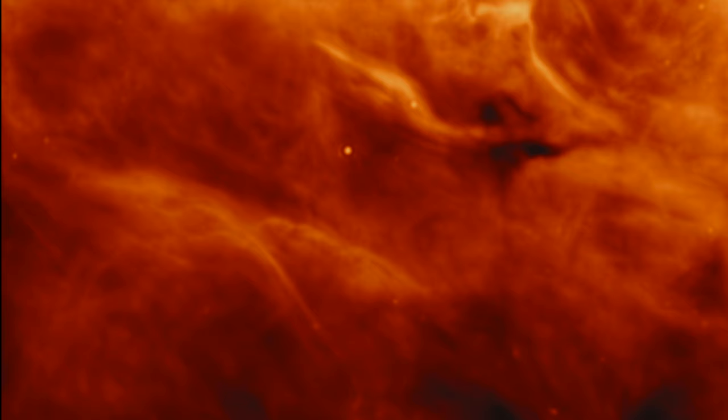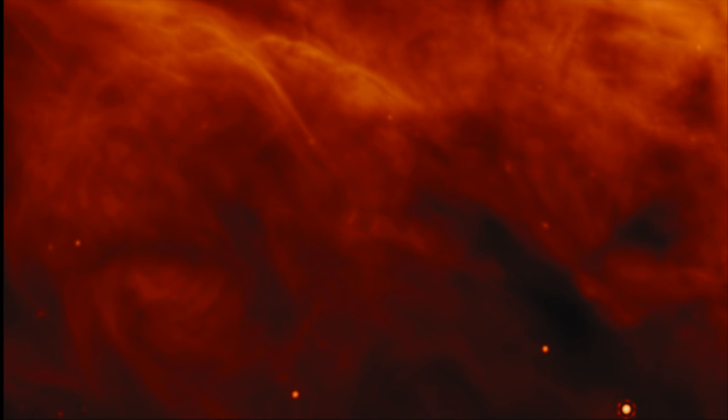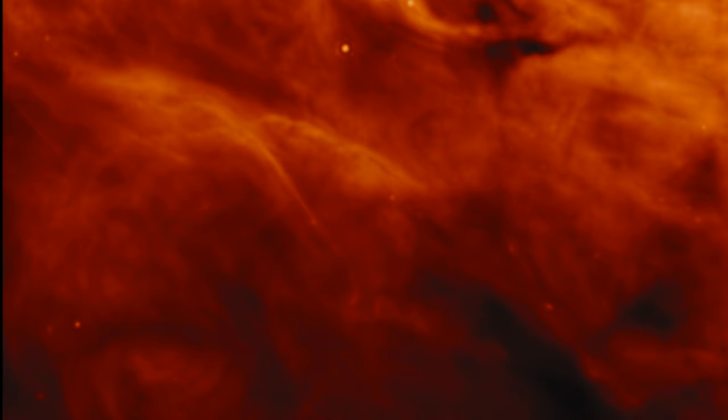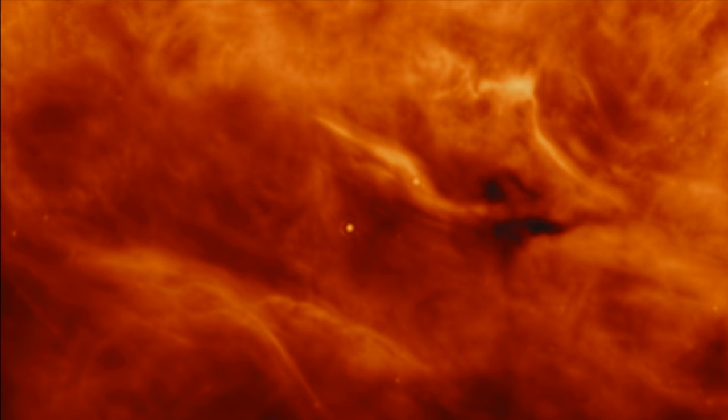But the story doesn't end with a single image. The region around Iras 23385, along with another entity named Iras 2A, hidden from view in this snapshot, has been under the watchful eye of an international group of astronomers. Their mission? To peer into the cradle of potential life-bearing planets to understand the chemistry of the cosmos in its infancy, before planets like our own have even formed.